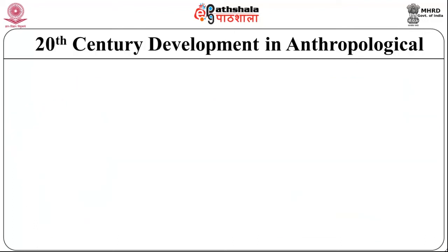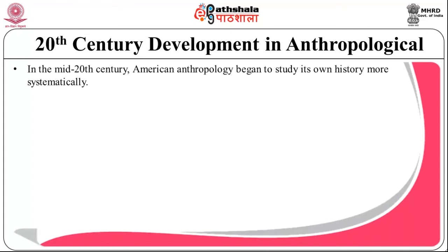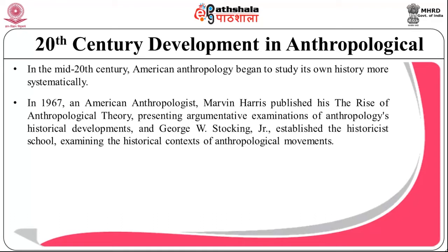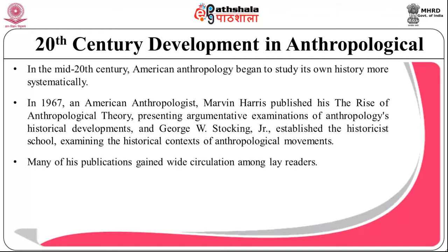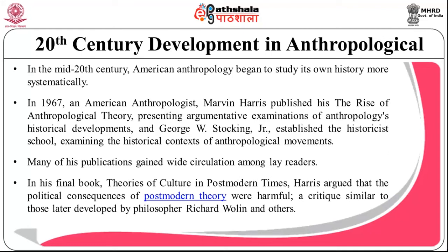Now let's focus on 20th century development in anthropological ideas and research. In the mid-20th century, American anthropology began to study its own history more systematically. In 1967, American anthropologist Marvin Harris published The Rise of Anthropological Theory, presenting an argumentative examination of anthropology's historical development. George W. Stocking Jr. established the historicist school, examining the historical context of anthropological movements. After publication of that work, Harris helped focus the interest of anthropologists in cultural-ecological relationships. In his final book, Theories of Culture in Postmodern Times, Harris argued that the political consequences of postmodern theory were harmful.